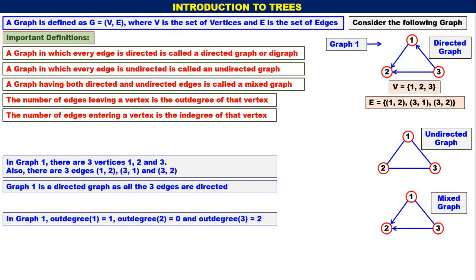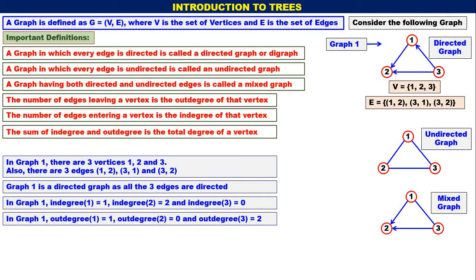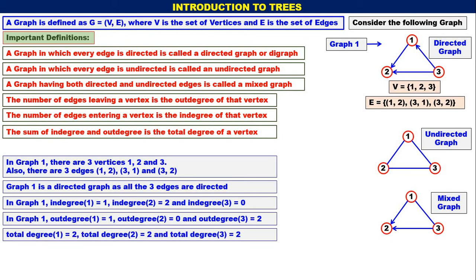The number of edges entering a vertex is the indegree of that vertex. In Graph 1, indegree of 1 is 1 because 1 edge is entering 1. Indegree of 2 is 2 because 2 edges are coming to 2. Indegree of 3 is 0 because no edges are coming to 3. The sum of the indegree and outdegree is the total degree of that vertex. Total degree of 1 is 2, total degree of 2 is 2, and total degree of 3 is 2 in Graph 1.